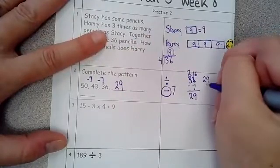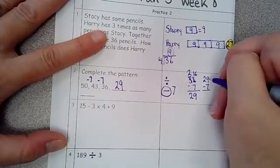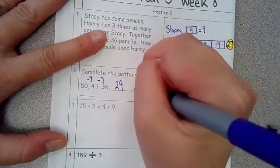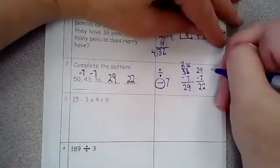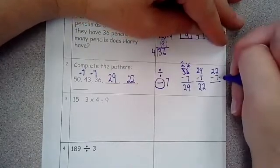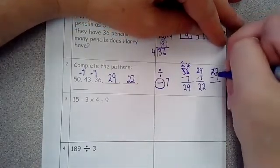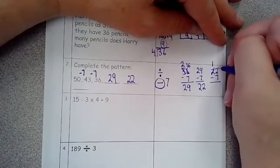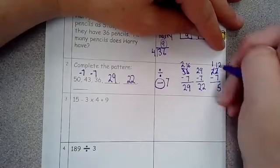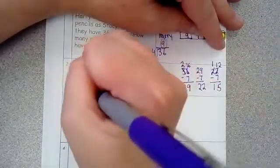Then 29 subtracts seven. Nine minus seven is two, bring down the two, this is 22. Then I'm going to do it again. 22 subtracts seven. I can't take seven away from two, I'm going to borrow from the two, it turns into one, two turns into 12. 12 minus seven is five, bring down the one, it is 15.